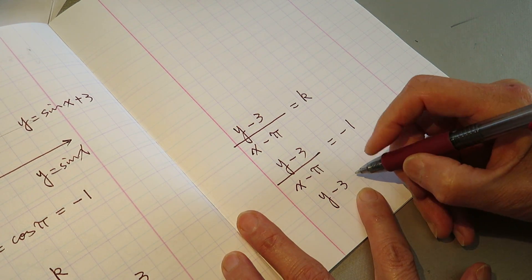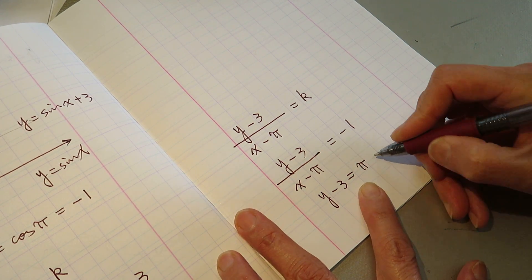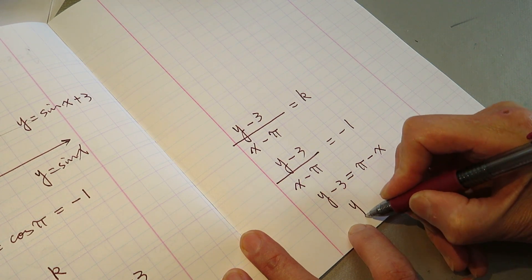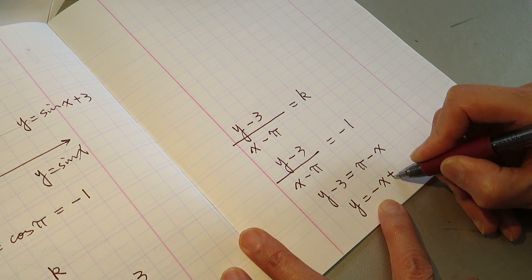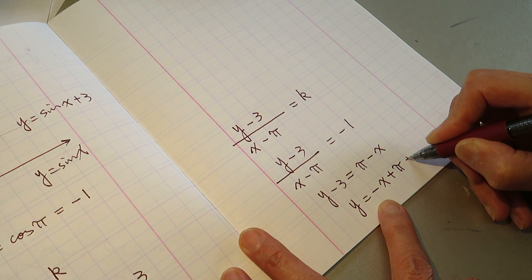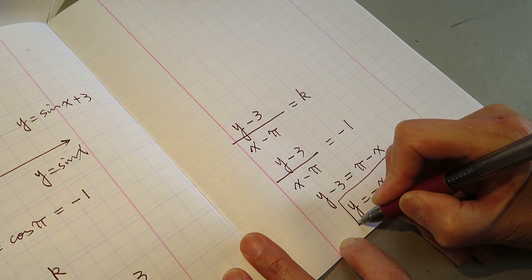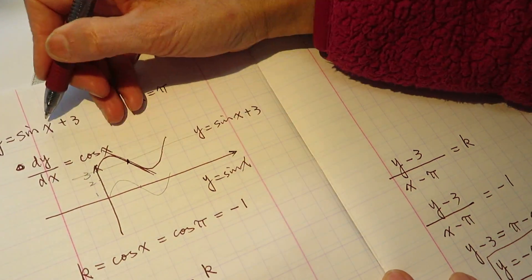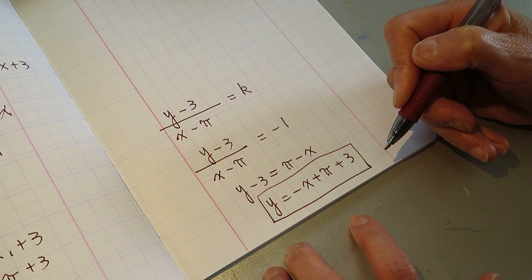So y equals negative x, plus pi, plus 3. So this is the function of this tangent line. This is what I figured out.